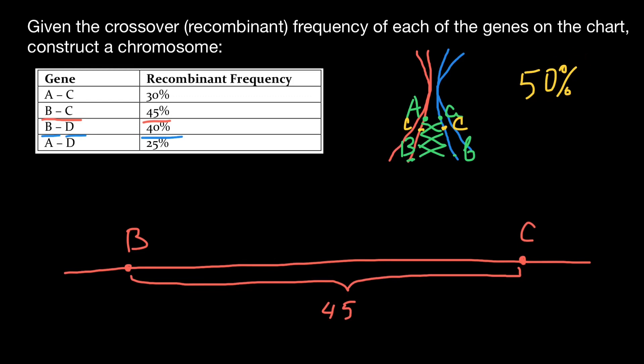So we have to put gene D somewhere here. So this is going to be the location of gene D. And frequency of the crossing over is going to be 40% or 40 centimorgans between gene B and D. And we also can say that between gene D and C, we would have 5% of the crossing over or 5 centimorgans.